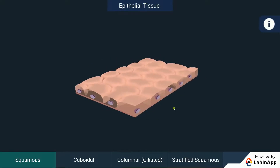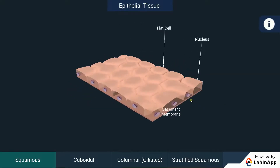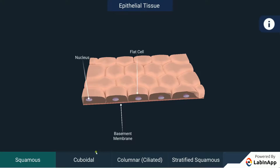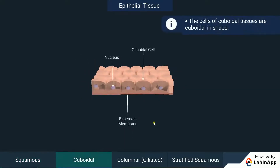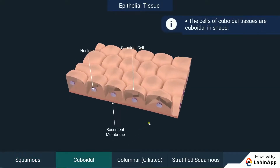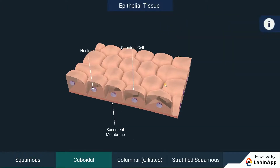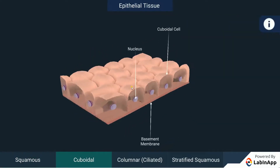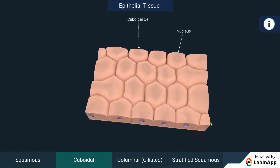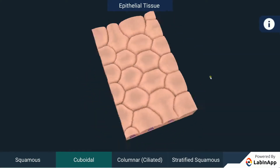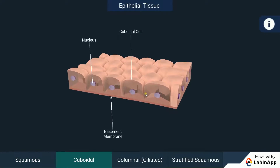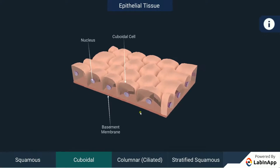Cuboidal epithelium: These cells are cuboidal in shape. They are found in the salivary glands, kidney tubules, sweat glands, etc. Their main function includes absorption, secretion and excretion. It is found on the inner side of the pancreatic ducts and salivary glands, and they mainly help in protection.